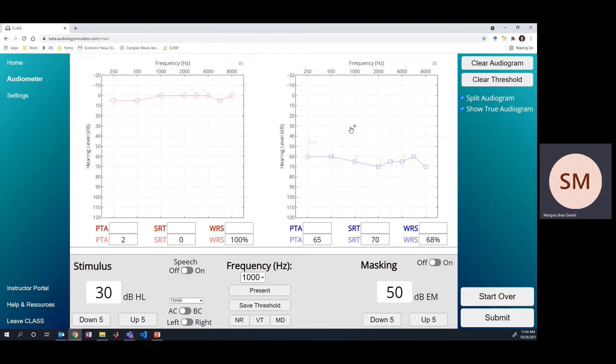In this case, we presented at 30 dB HL in the left ear, and the interaural attenuation is 40 dB. So the amount of the stimulus that crossed over is 30 minus that 40 dB of interaural attenuation. So this 30 dB sound crossed over but got smaller by 40 dB and was present in the right ear at negative 10 dB HL.